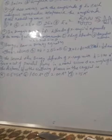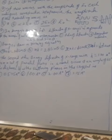Next problem. The second order Bragg's diffraction of X-rays with lambda equal to 1 angstrom from a set of parallel planes in a metal occurs at an angle of 60 degrees.